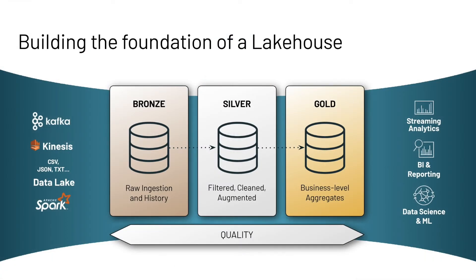In Databricks we use a medallion approach: bronze, silver, and gold. Data quality improves as you move from one layer to the next, getting ready for consumption. In an ideal flow, you have sources on the left, a couple of stages where data gets cleaned up and prepared for your query. This is what you see in high-level architectures — but we all know this is not the reality.